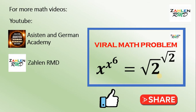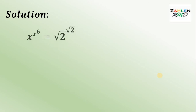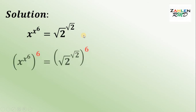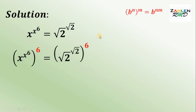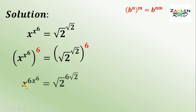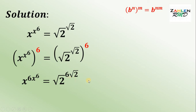Now let's start with the solution. Here's our equation: x raised to x raised to 6 is equal to square root of 2 raised to square root of 2. The first thing to do is to raise both sides by 6. Now apply the laws of exponents: if we have b raised to n, raised to the power of m, it equals b raised to n multiplied by m. Therefore, our equation becomes x raised to 6x raised to the 6th power, equal to square root of 2 raised to 6 square root of 2.